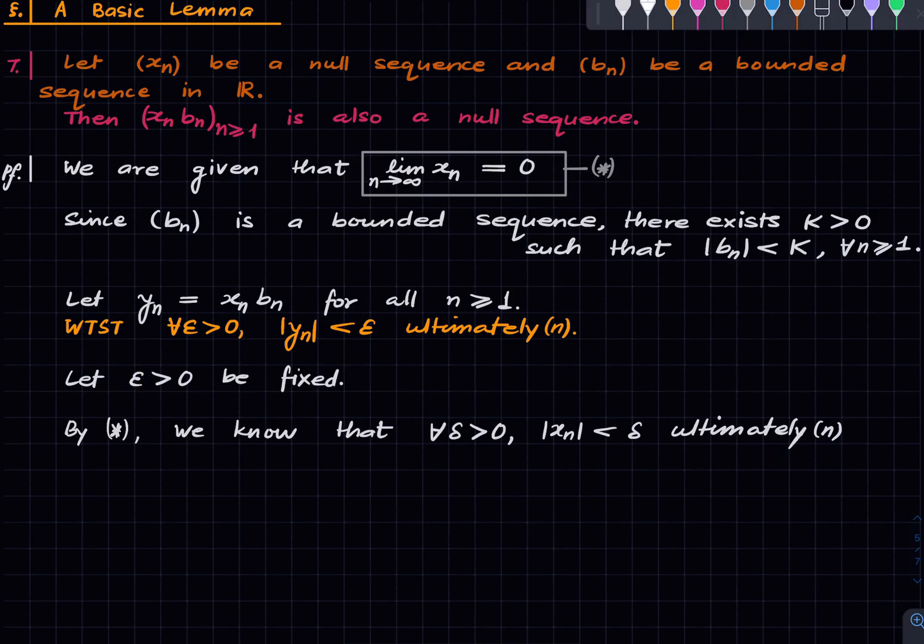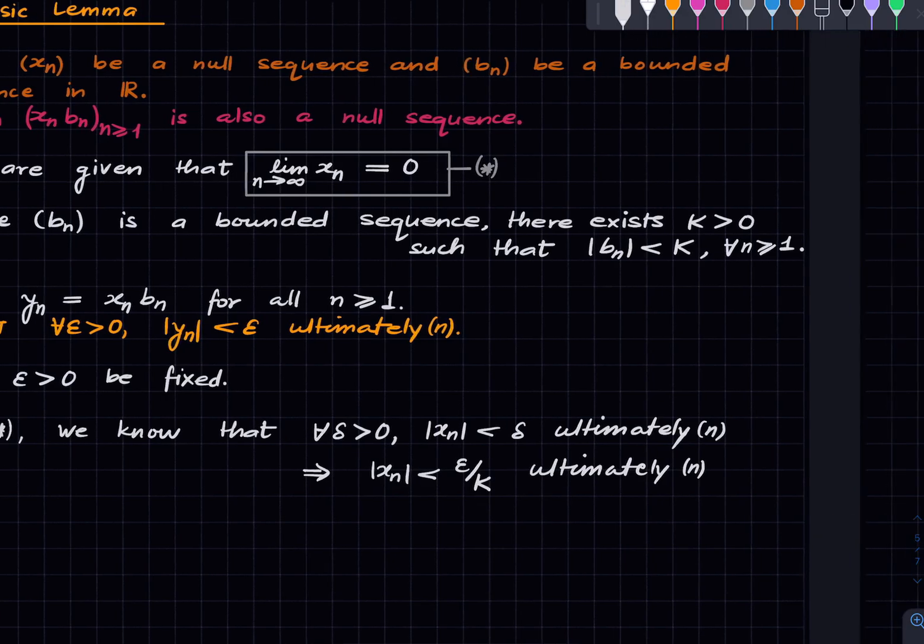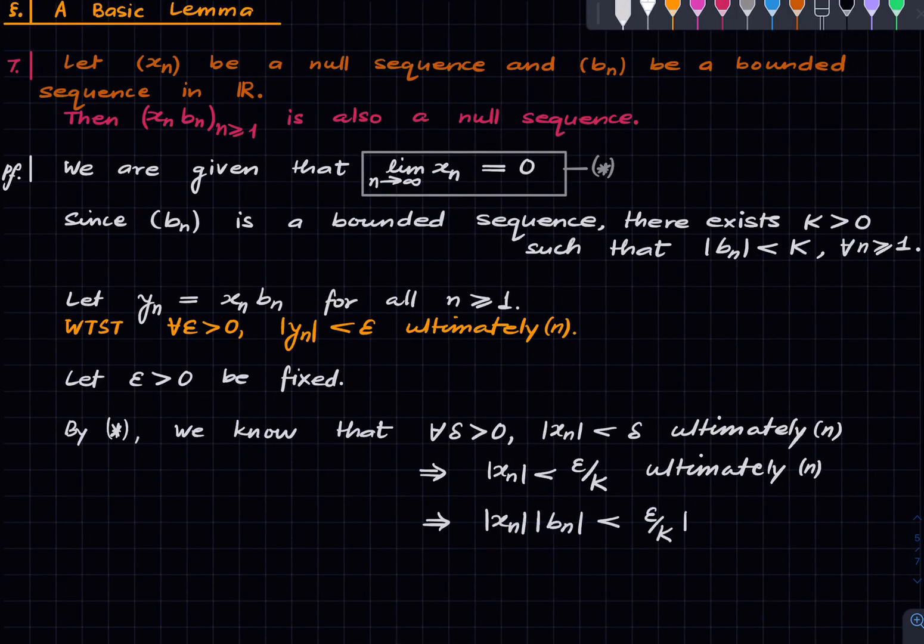By star, we know that for all delta greater than zero, the absolute value of xn is less than delta ultimately. This is exactly the meaning of star. We are not using the symbol epsilon here. Instead of epsilon we have used delta, because if we use epsilon it would be improper—we have already reserved epsilon for another purpose. So we cannot reuse it again and write a confusing proof. It's illegitimate to use it again here. So we have the statement. And now this in particular means that the absolute value of xn is less than epsilon by K ultimately. Now what did we do? This statement is true for all delta, so we can choose a specific value of delta, one of our liking, one which is suitable to our needs. And this is the value that we choose: delta equals epsilon by K. Now it may seem a bit contrived as to what prompted this, but you will see what prompted this in the next step.